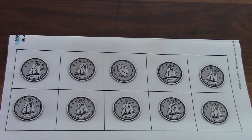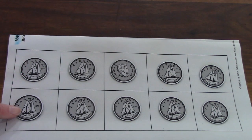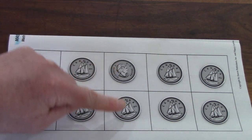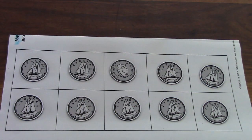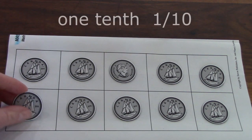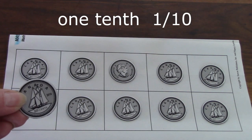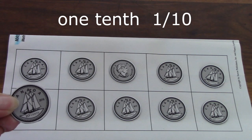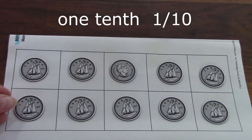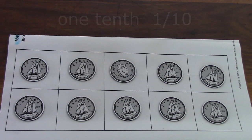This isn't fruit, but we've taken one dollar and cut it into ten pieces: ten, twenty, thirty, forty, fifty, sixty, seventy, eighty, ninety, one hundred. We need one hundred cents for a dollar. So if we have one dime, we have one-tenth of a dollar, or one out of the ten pieces that we need to make a dollar.